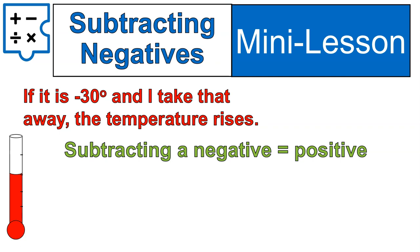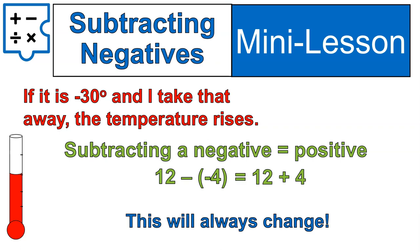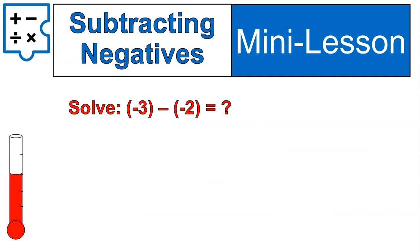This is a difficult concept, but one you'll definitely see in math problems. Here's an example of how it works: 12 minus negative 4 is the same as 12 plus 4. Basically, if you ever see a minus negative, change it to a positive. Let's practice: if I had negative 3 minus negative 2, I would change it to negative 3 plus 2. Notice that minus negative became plus positive. Negative 3 plus 2 equals negative 1.